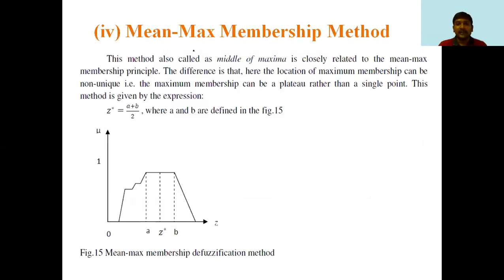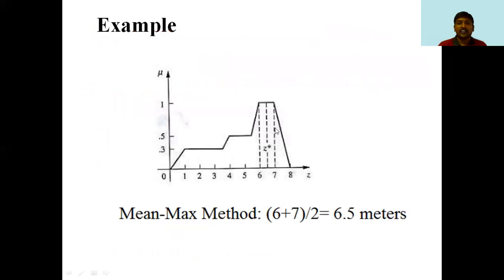The mean max membership method, also called middle of maxima, is closely related to the maximum membership principle. The difference is that the location of maximum membership can be non-unique. Here z* is calculated as z* = (a + b) / 2, where a is the first of maximum and b is the last of maximum. For example, with a = 6 and b = 7, z* = (6 + 7) / 2 = 6.5.